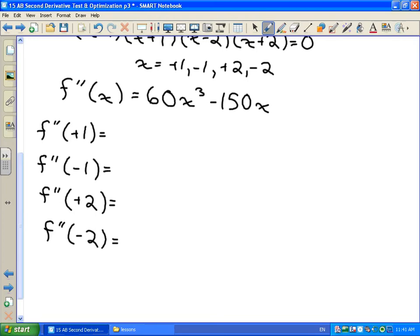So this is basically just calculator work here. So let's just write down what the answers are. We get negative 90, positive 90 at negative 1. We get 180 at x equals positive 2 and minus 180 at x equals negative 2.